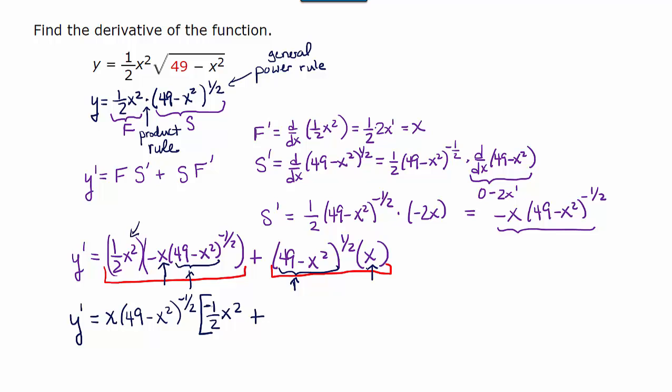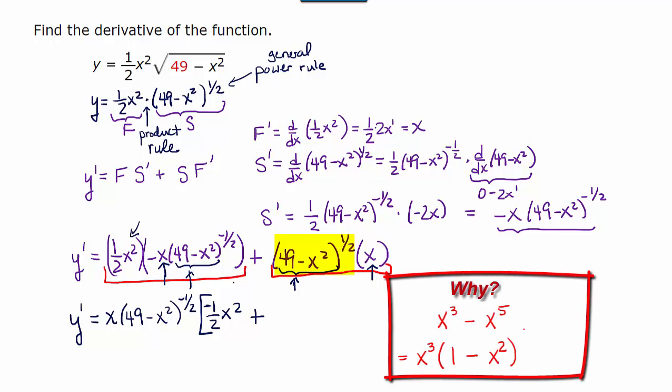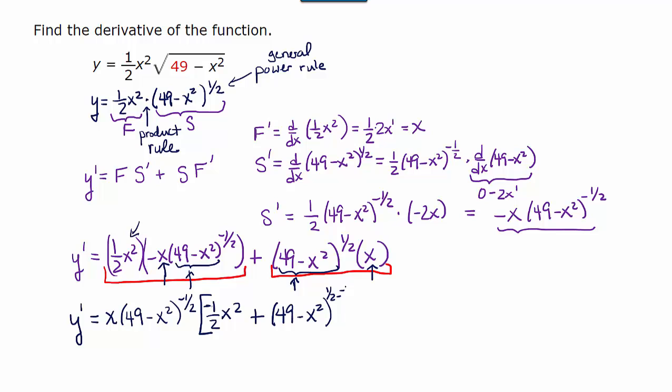So that brings us to the second term. We took out the x, that's gone. But we didn't take out 49 minus x squared to the one half, we took out 49 minus x squared to the negative one half. So we have to subtract one half minus negative one half to see what power of this factor is left behind. One half minus negative one half, which is actually one.